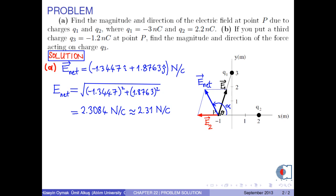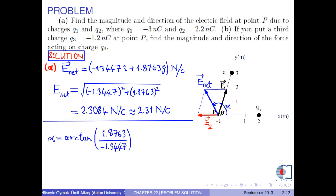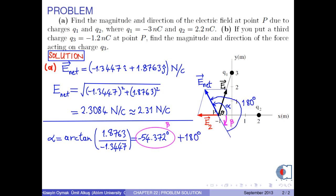The direction of the electric field at point P can be found by the formula. It calculates to negative 54.372 degrees. However, we are searching for a positive result, so we add 180 degrees to this result. Finally, we obtain angle alpha as approximately 126 degrees.